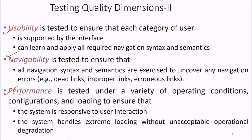Usability is tested to find out whether each category of user is supported by the interface and whether they can learn and apply all required navigation syntax and semantics properly. Navigability is tested to ensure that all navigation syntax and semantics are exercised to uncover any navigation errors, just like we did in the control flow graph checking all linearly independent paths. Here we want to find all linearly independent navigations, such as dead links, improper links, or erroneous links.